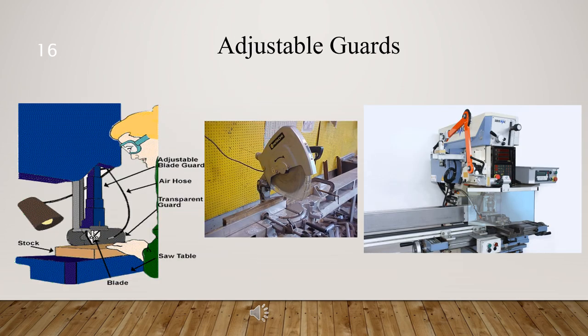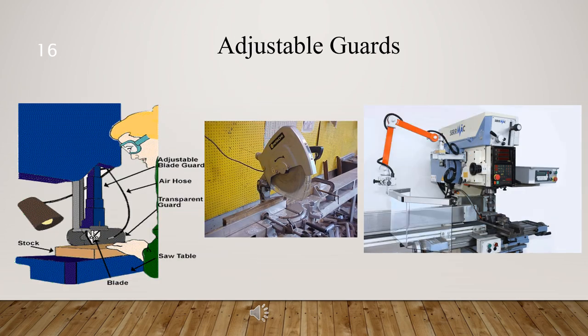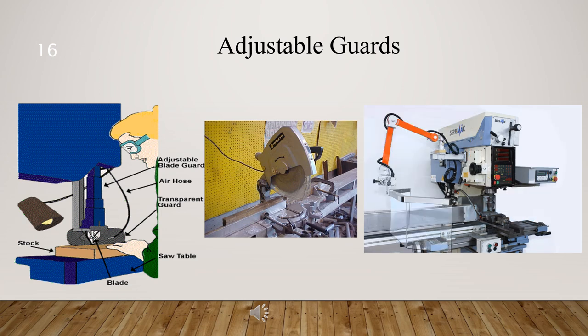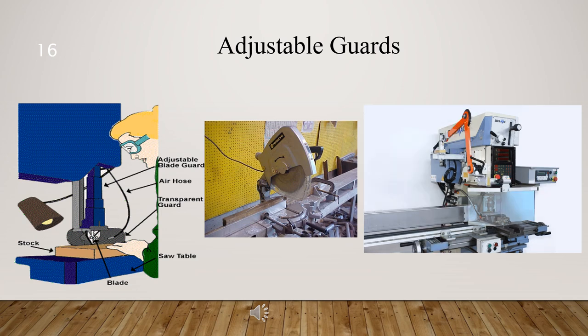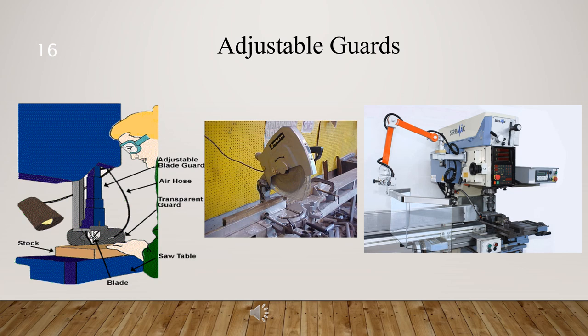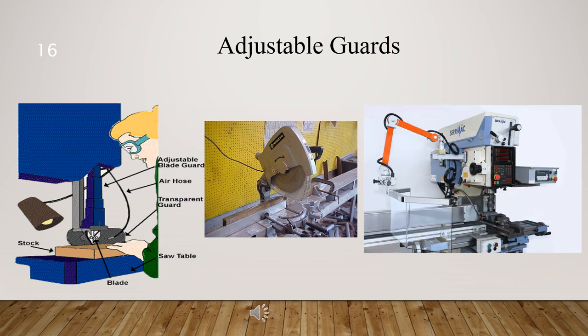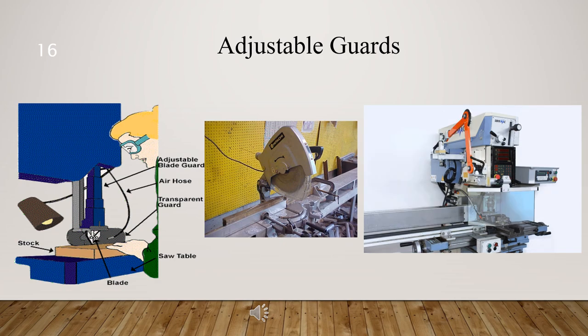In this part, we will learn about adjustable guards. Adjustable guards, like fixed guards, are permanent, but they can be adjusted to allow the machine to handle different sizes of material. They must be manually adjusted and locked into place, so all employees who will operate adjustable guards must be trained on their use.